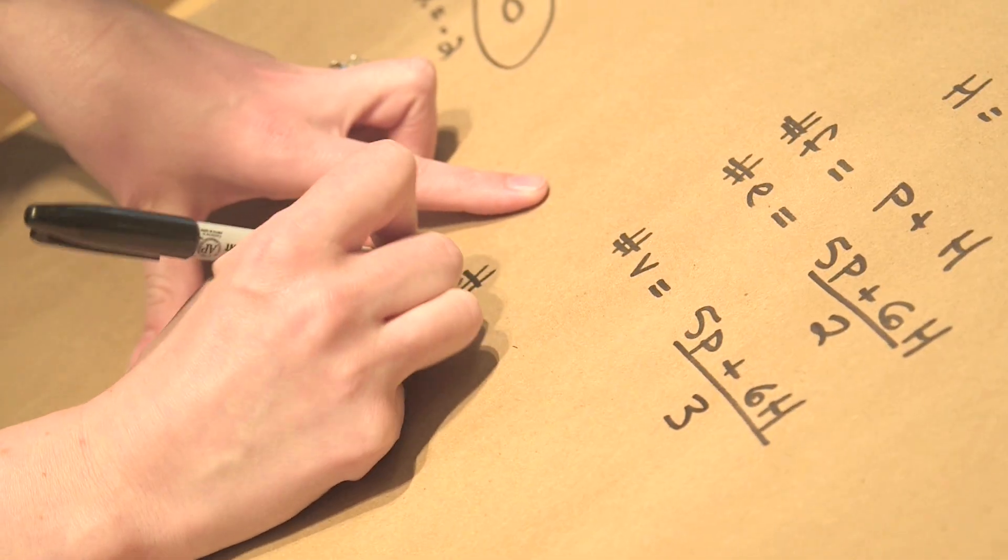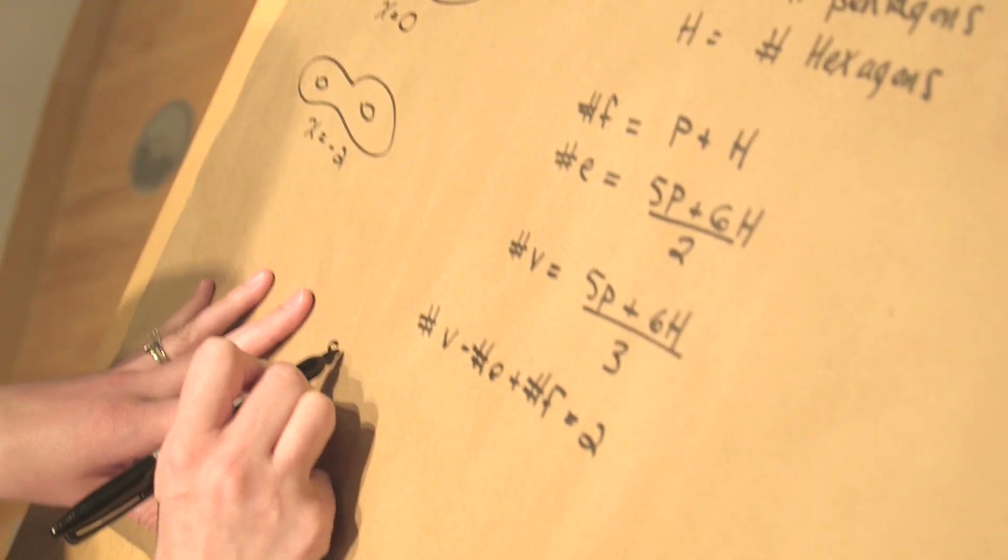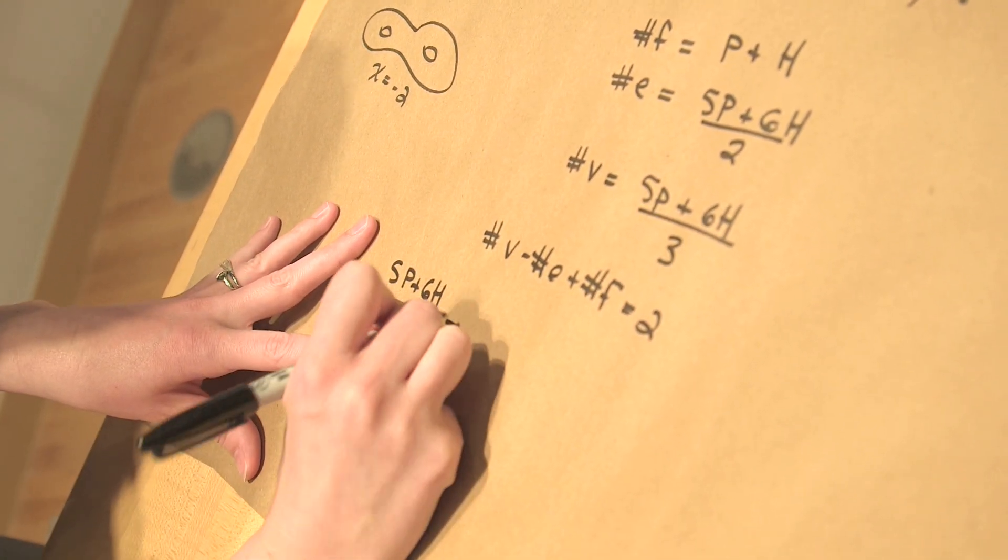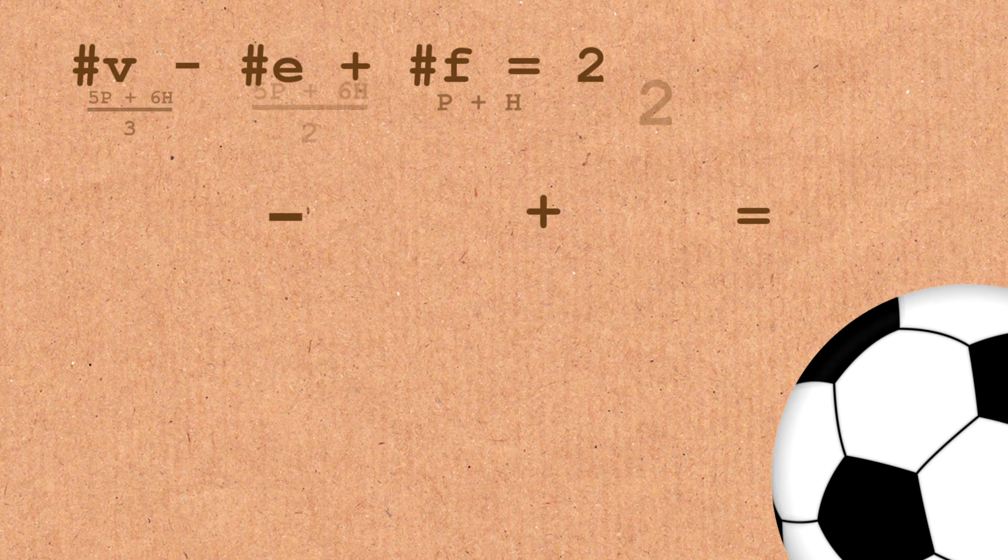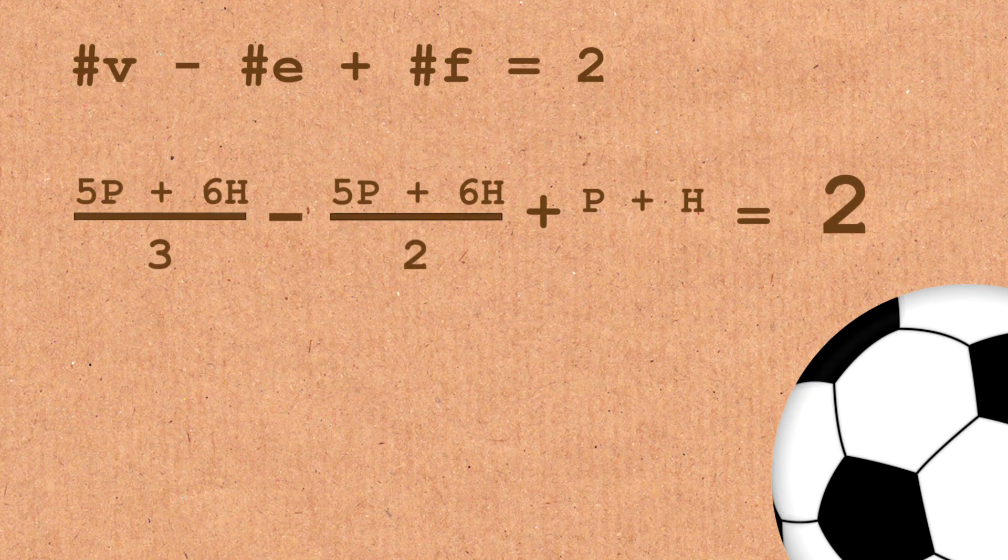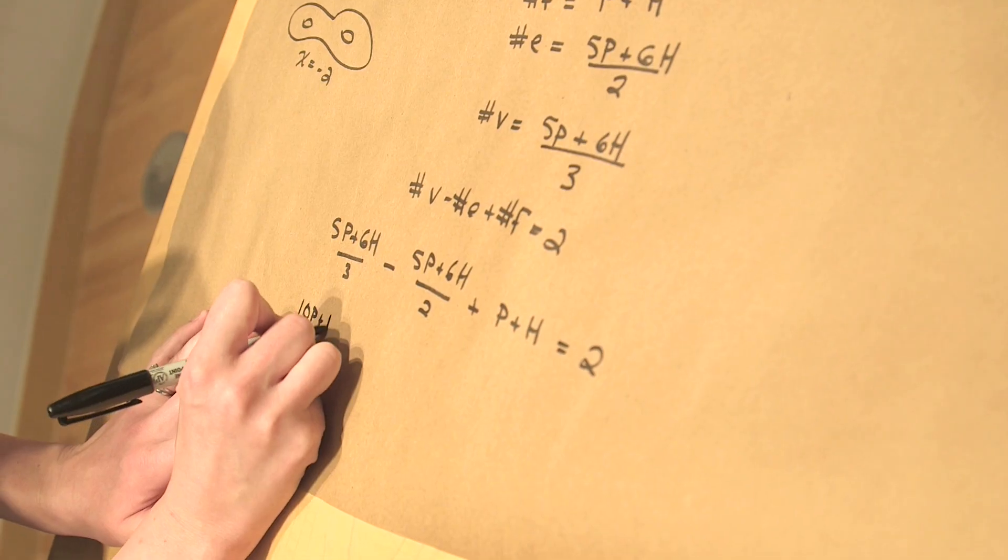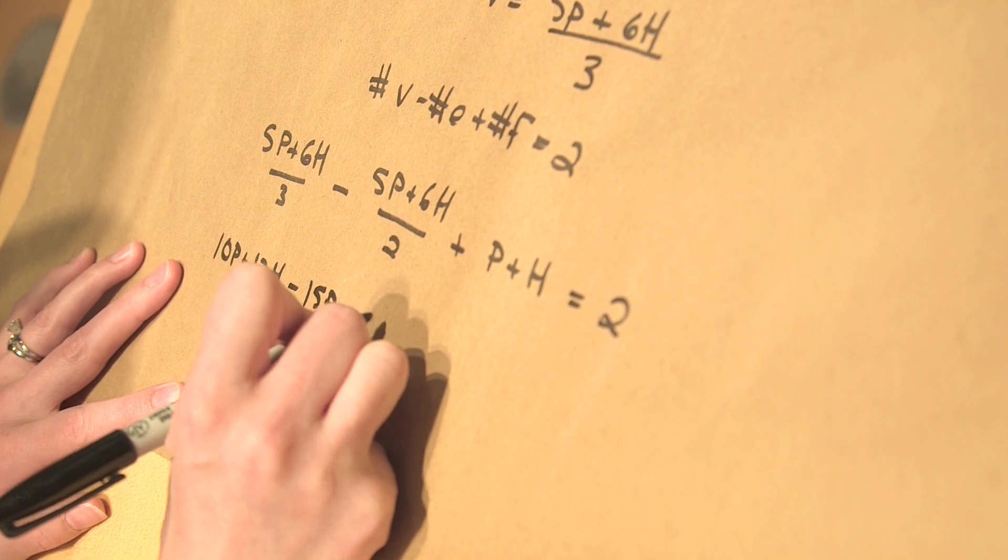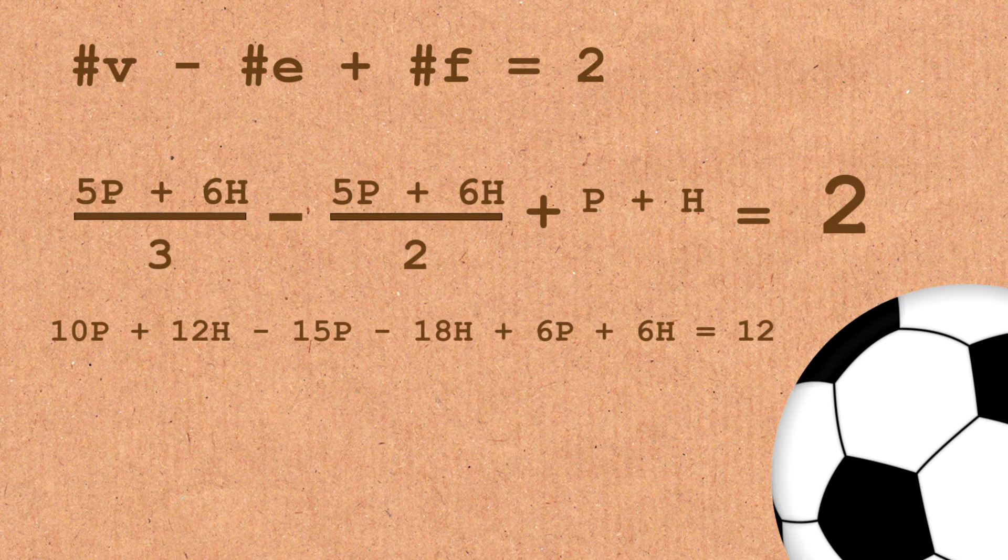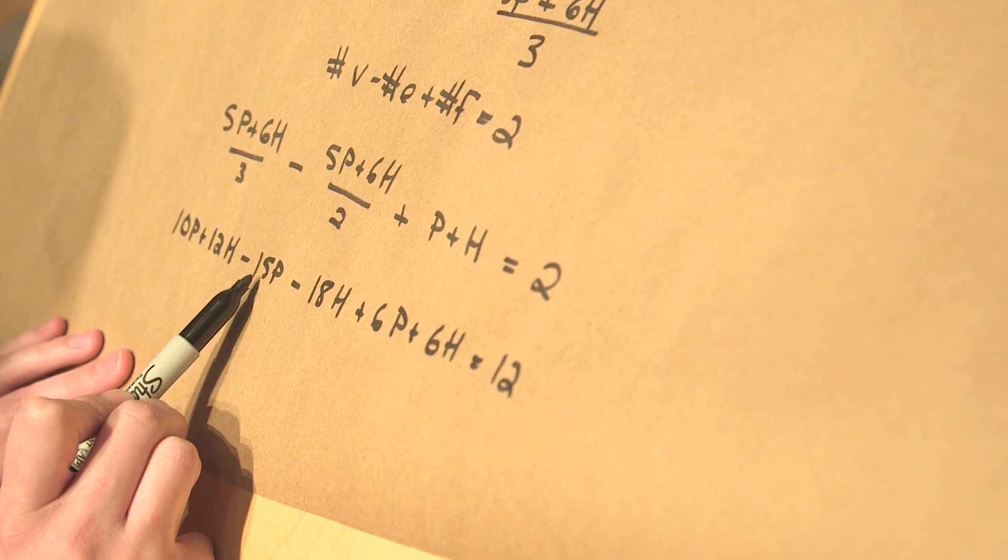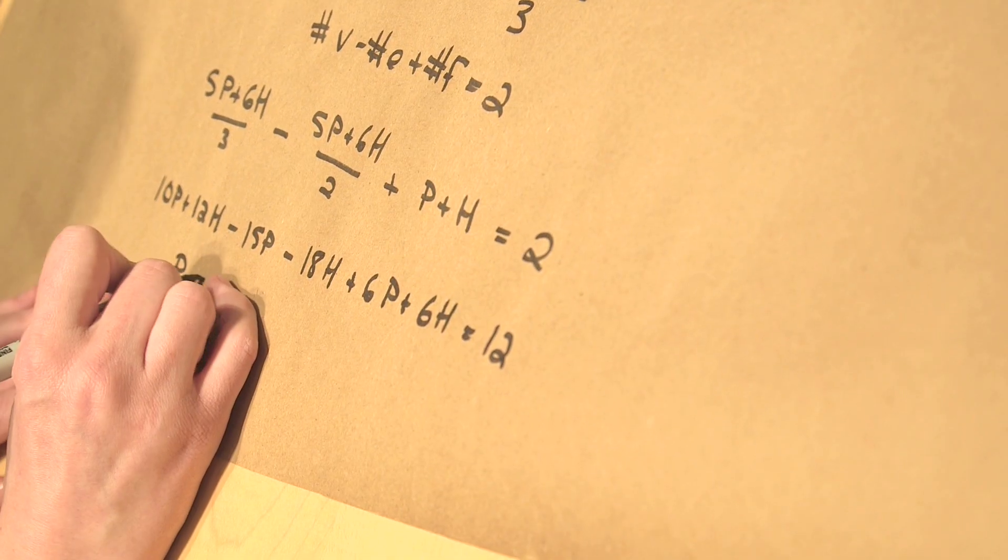And now I'm going to use the Euler characteristic, which tells me that the number of vertices minus the number of edges plus the number of faces has to be two. Okay, so let's do the math. So the number of vertices was 5P plus 6H divided by three, minus the number of edges, which was 5P plus 6H divided by two, plus the number of faces, which was P plus H. I'm just plugging in all these things. It has to be equal to two. So now this is an algebra problem. Let's multiply everything by six to get rid of these denominators. So when I do that, I get 10P plus 12H minus 15P minus 18H plus 6P plus 6H equals 12. Now this looks a little better, so let's figure out what we've got. I've got 10P minus 15P is negative 5P plus 6P plus 6P is just P. 12H minus 18H plus 6H is zero, and I get P is equal to 12.